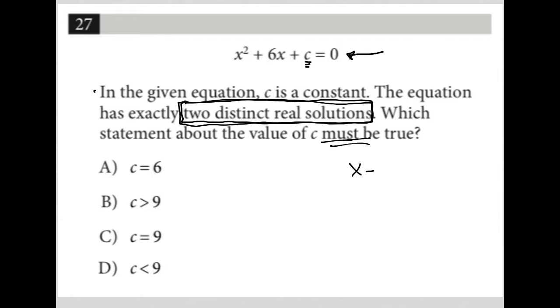The quadratic formula tells me that X is equal to negative B plus or minus the square root of B squared minus 4AC all over 2A. And this happens only in this scenario where you have your quadratic equation equal to 0.